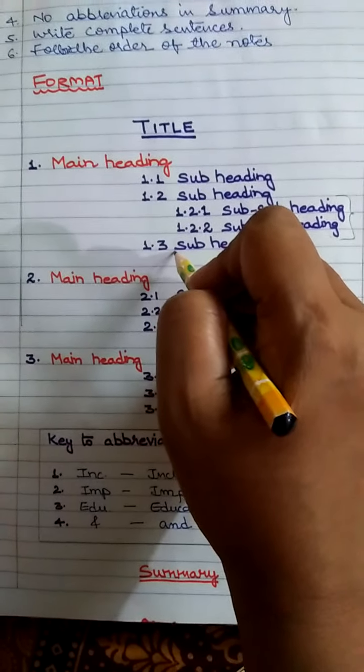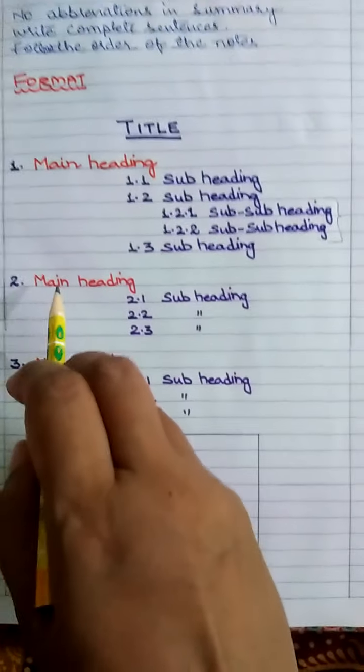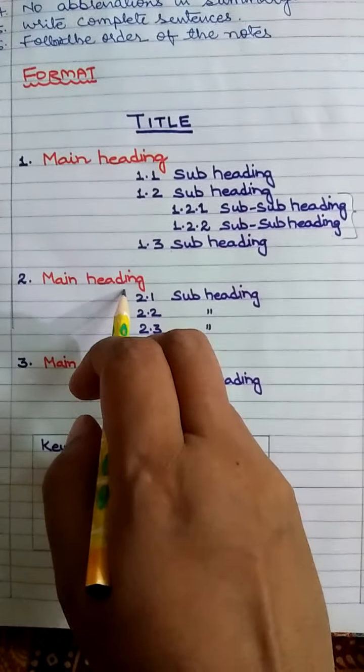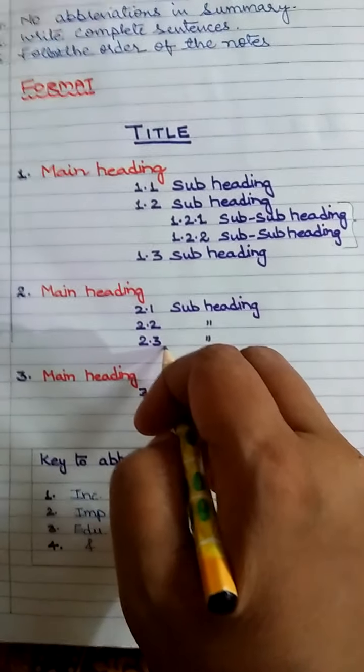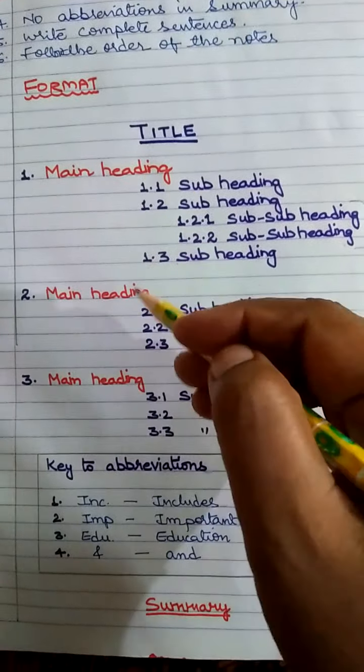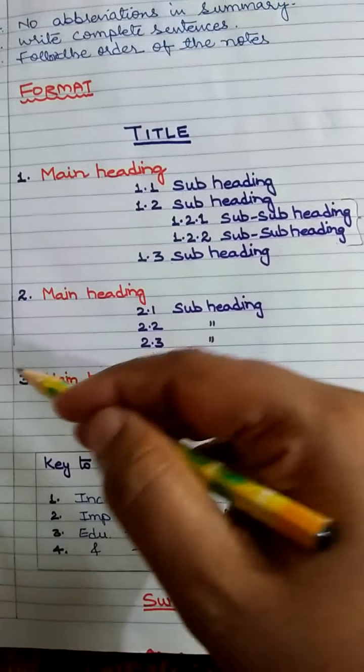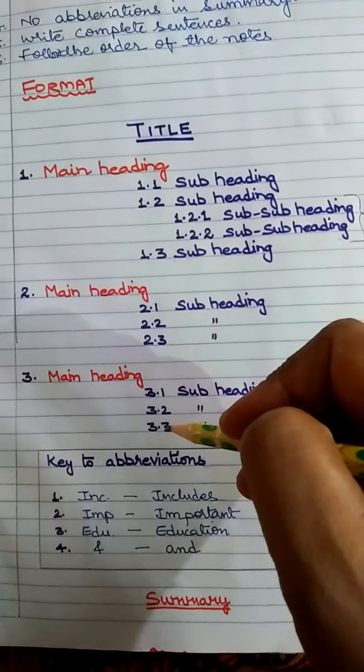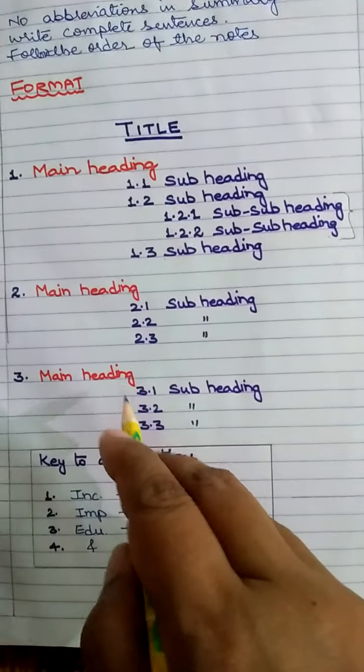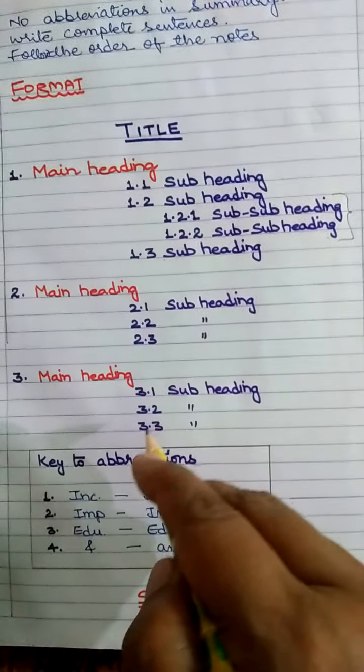Then we go to the second main heading. Then 2.1, 2.2, 2.3. Follow the order and the sequence the way it's been written over here. Then third main heading and 3.1, 3.2, 3.3. Again three subheadings over here.